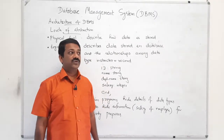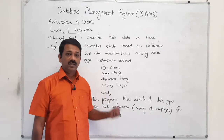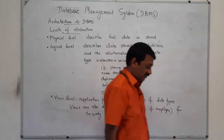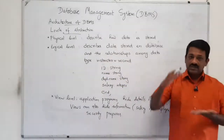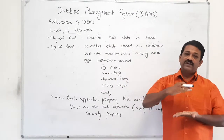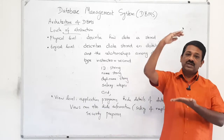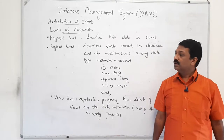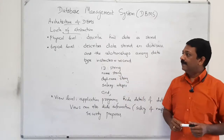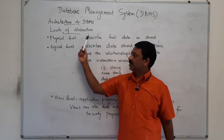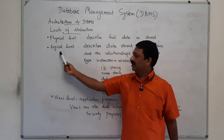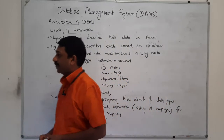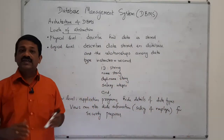Good morning. Today we are going to discuss the architecture of DBMS. The architecture of DBMS refers to its structure — how many different levels of abstraction there are. Mainly there are three levels of abstraction: physical, logical, and view levels.